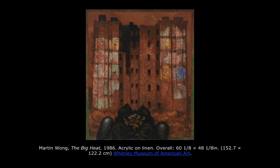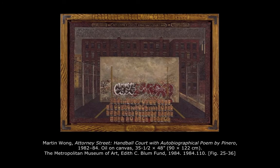Martin Wong began his career by working as a courtroom artist, and his works were a combination of public writing, graffiti, sign language, and charts of the constellation. The Big Heat, from 1988, depicts two firemen in each other's arms as the buildings burned in the background. Attorney Street, handball court with autobiographical poem by Pinheiro, from 1982 to 1984, depicts a landscape of lower Manhattan with Wong's stylized sign language notation of a poem.